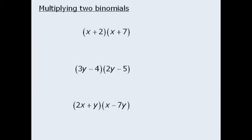To multiply pairs of binomials, we will use something called the FOIL method. FOIL is an acronym that stands for First, Outer, Inner, and Last.